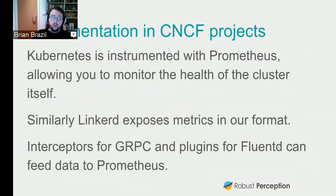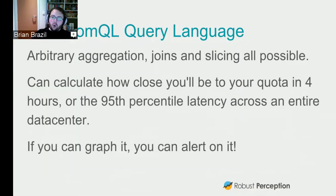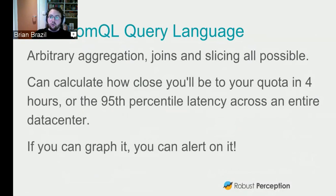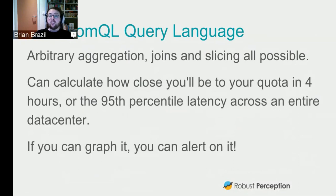Now we've got all your applications either directly or via an exporter providing data, and we've discovered them all from Kubernetes service discovery. What do we do with all this data? We have the PromQL query language, which can do basically any math you want on time series data — it can aggregate, join series together, slice things, and do predictions. For example, knowing you're going to run out of space in four hours is more interesting than knowing you're at 95% of quota. A key point is that there's no distinction in Prometheus between graphing and alerting — it's the same expression language.